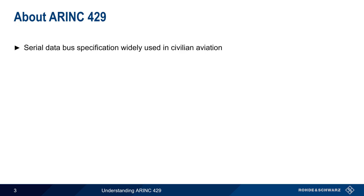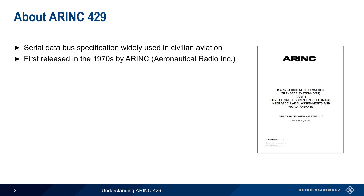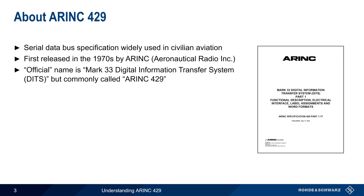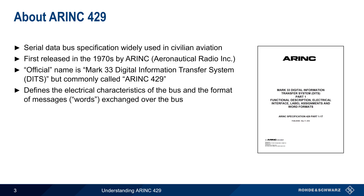ARINC 429 is one of the most widely used standardized serial data buses in civilian aviation, and was first published in the 1970s by ARINC, or Aeronautical Radio Incorporated. The official name of this system is Mark 33 Digital Information Transfer System, but it's generally simply referred to as ARINC 429. This specification defines both the electrical characteristics of the data bus, as well as the format of the messages, called words, that are exchanged over this bus.